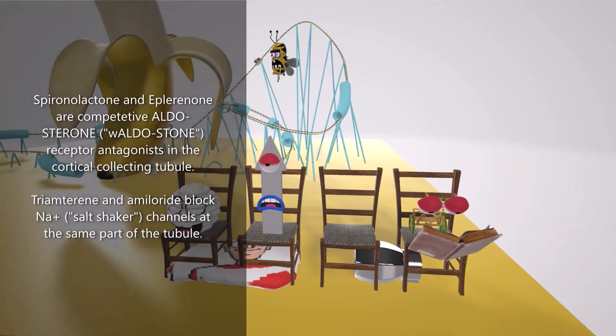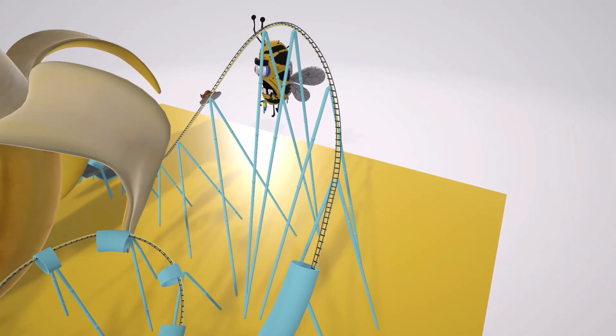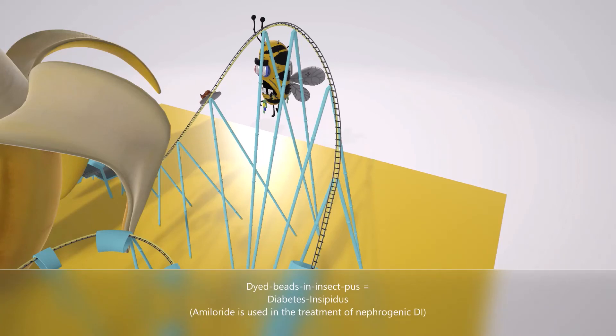Now, let's take a look at amiloride for a minute. Next to the meal on ride is this insect pus guy. This insect pus guy showed up in our video on diabetes insipidus. And he's got dyed beads in the insect pus. Dyed beads in insect pus for diabetes insipidus. Amiloride is also used in the treatment of diabetes insipidus, the nephrogenic type.